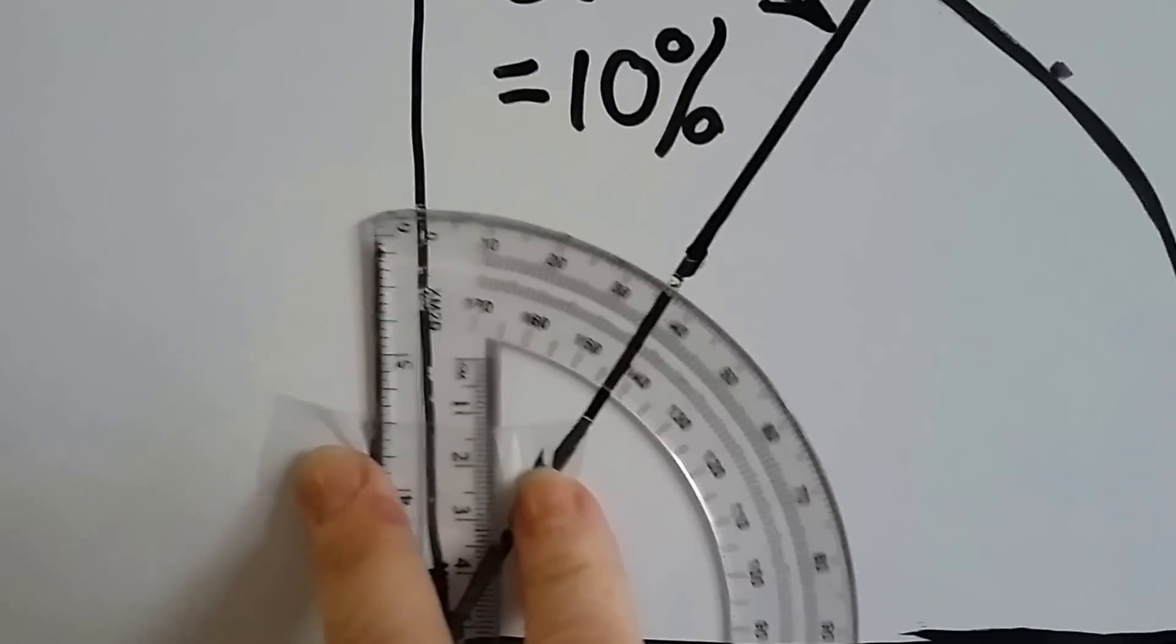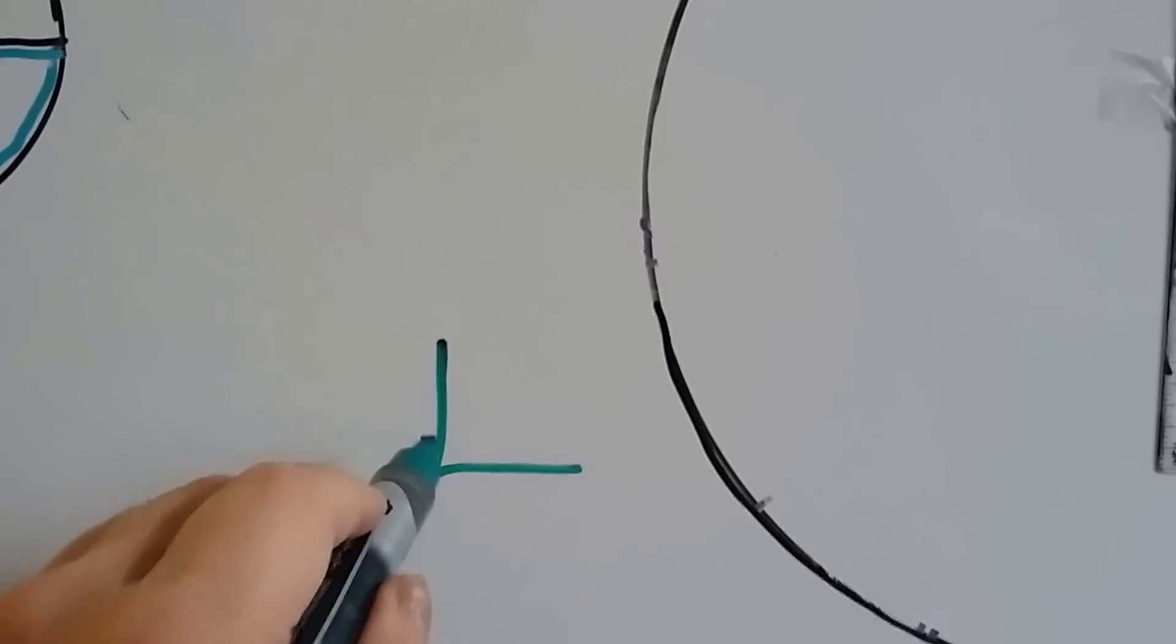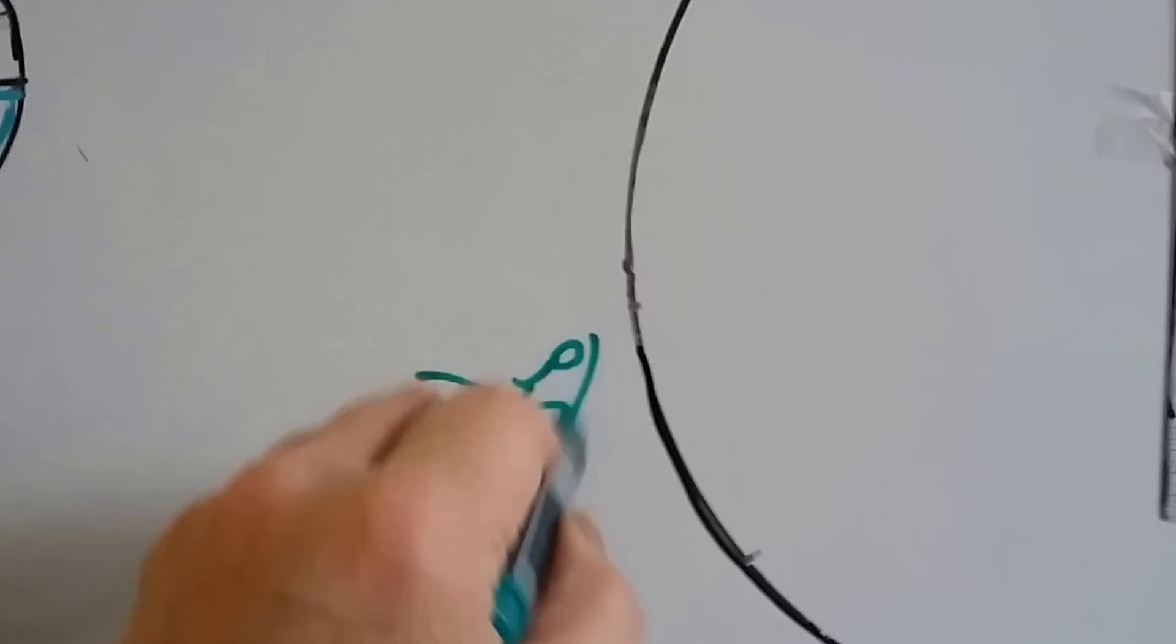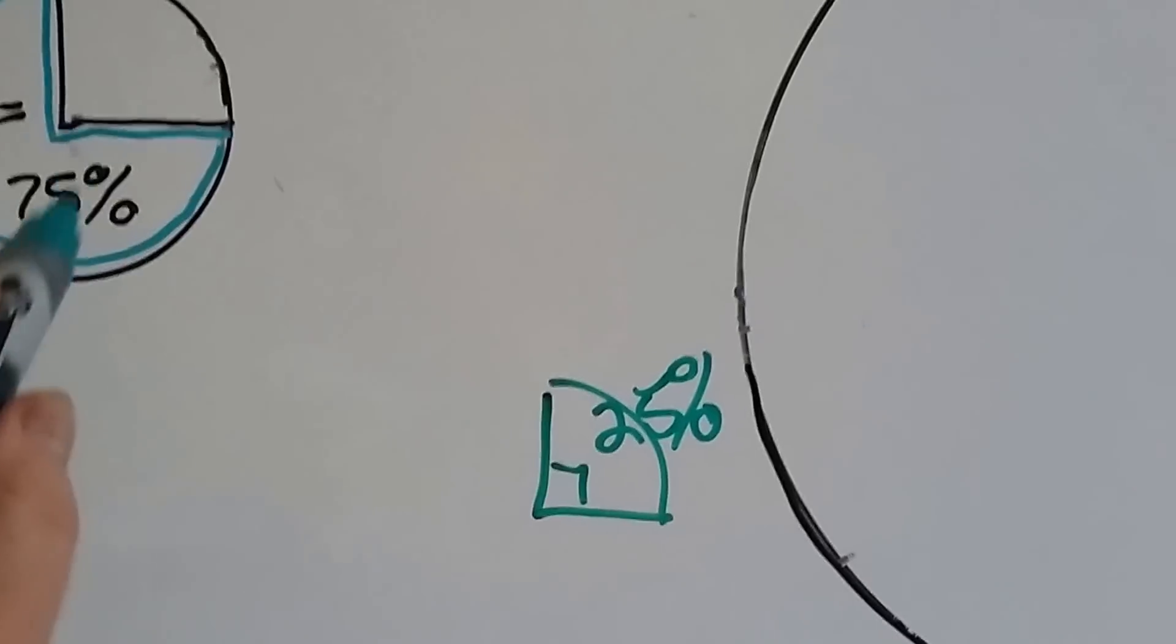Do you remember from our math that 90 degrees is a right angle? When you have a right angle like this, that's a 90 degree angle. That's also 25% of a circle. It's one-fourth of a circle. That's a right angle.